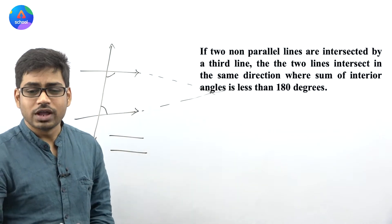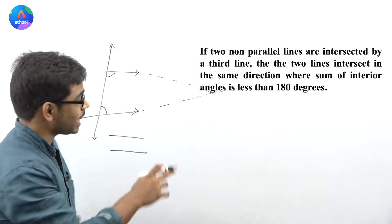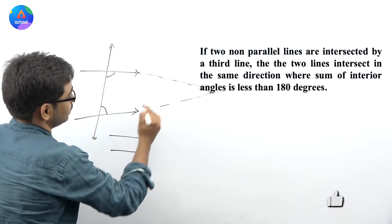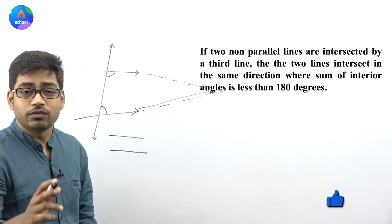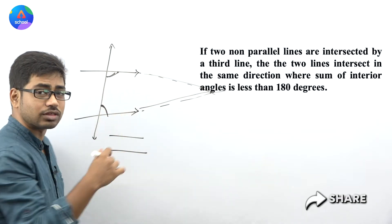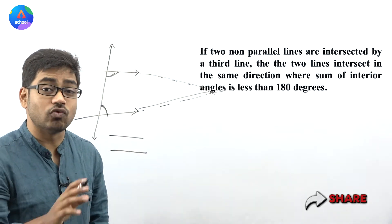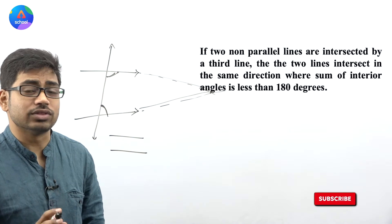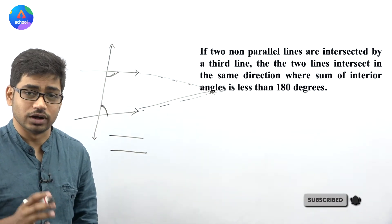Then the two lines intersect in the same direction where the sum of interior angles is less than 180 degrees, which will be less than 180 degrees.